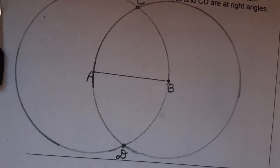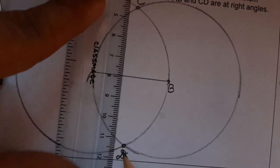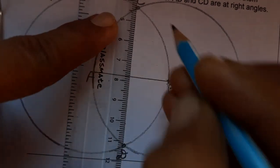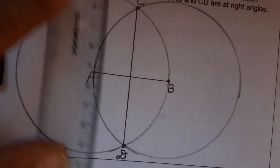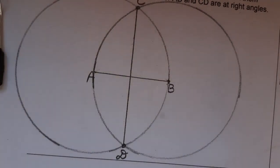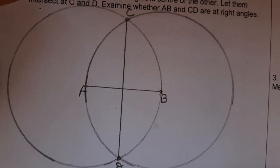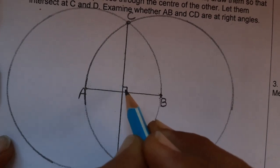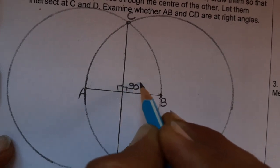Examine whether AB and CD are at right angles. Now let's join CD. We have joined CD. Examine whether AB and CD are at right angle. Yes, of course they are at right angle, 90 degrees. Yes, this is 90 degrees.